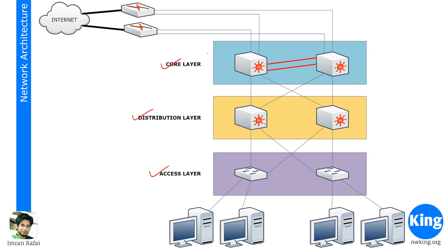The distribution layer is also called the building distribution layer. If your campus has more than one building, each of those buildings will have one distribution layer, where all the access layer switches of that building would be wired to it. Then you have another layer — the core layer. The core layer is typically where outside connections, such as internet or off-site VPN connections, are terminated. So the core layer is your link to the outside world, to the Layer 3 routing world. If you have many buildings, each will have one distribution layer, and all those distribution layer devices would connect to the core layer switch.